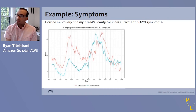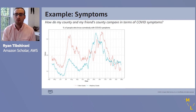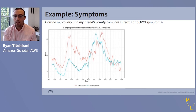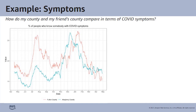The next examples are based on the massive surveys Delphi is running in coordination with Facebook. Here I'm comparing symptoms reported through the survey — specifically, we ask people to report on whether they know people in their local community who have COVID symptoms, an interesting indicator based on proxy information. I'm comparing my county, Allegheny County, with Fulton County in Georgia. There's quite a different pattern in the early days, and they peak at somewhat different times in the third wave, but both extend to over 30% of people reporting they know somebody with COVID symptoms at their peak.